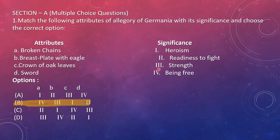Breastplate with eagle means strength, because the eagle flies in the sky with full strength. Crown of oak leaves means heroism. Sword means readiness to fight — it is a weapon used to fight. So that means readiness to fight. Okay, we'll move to the next question.